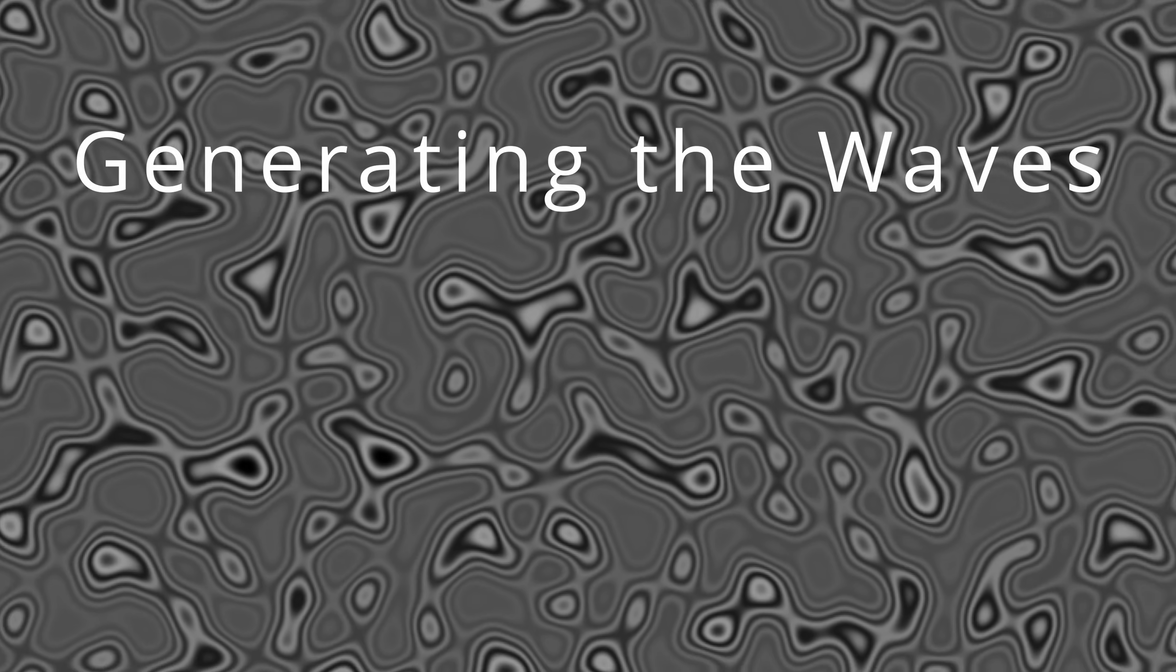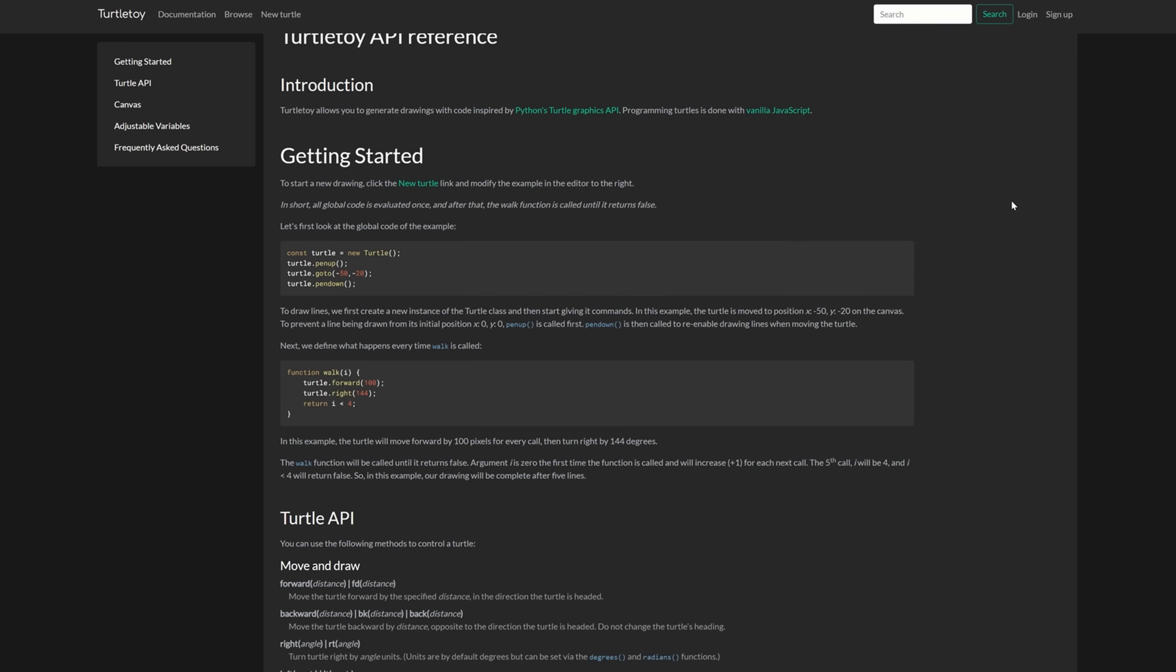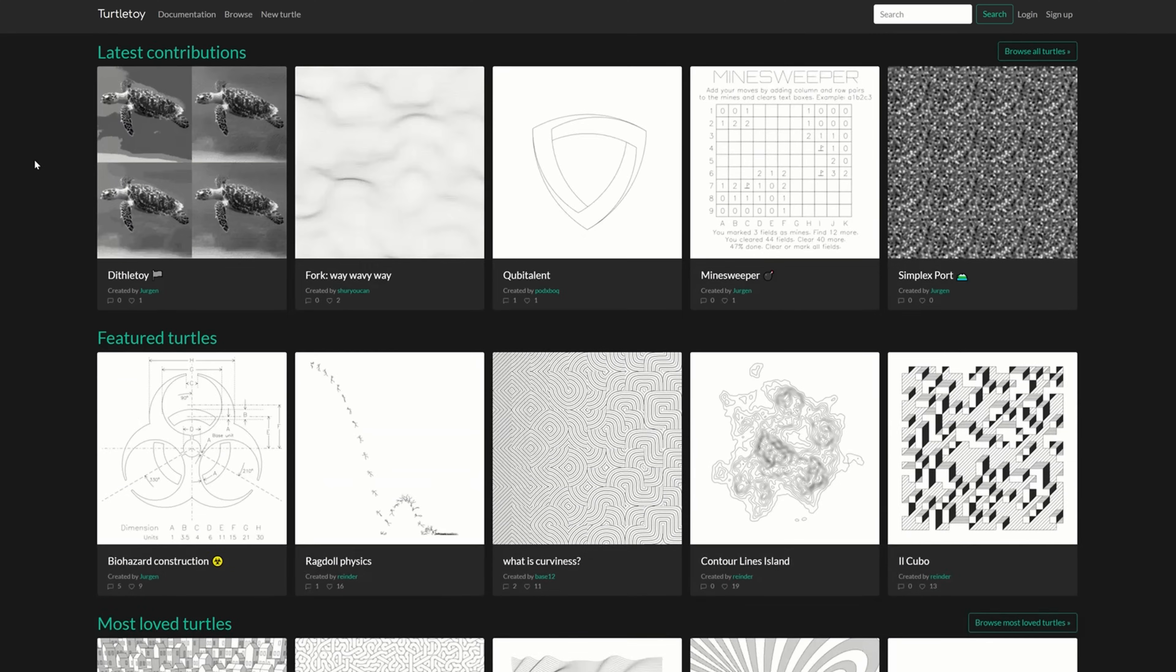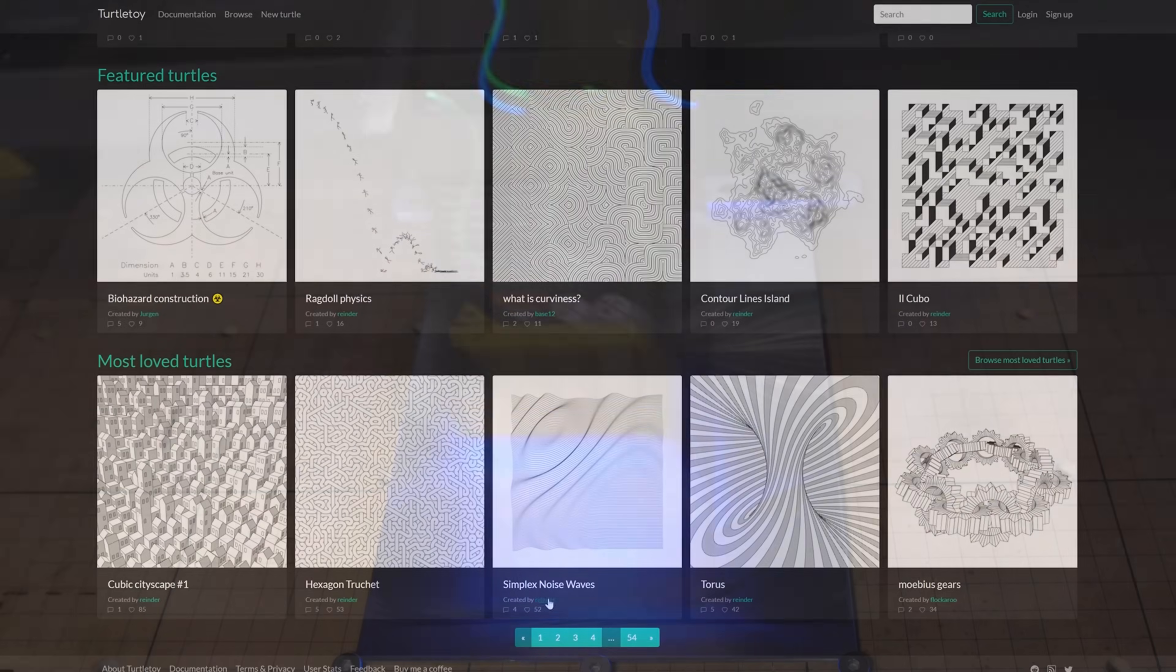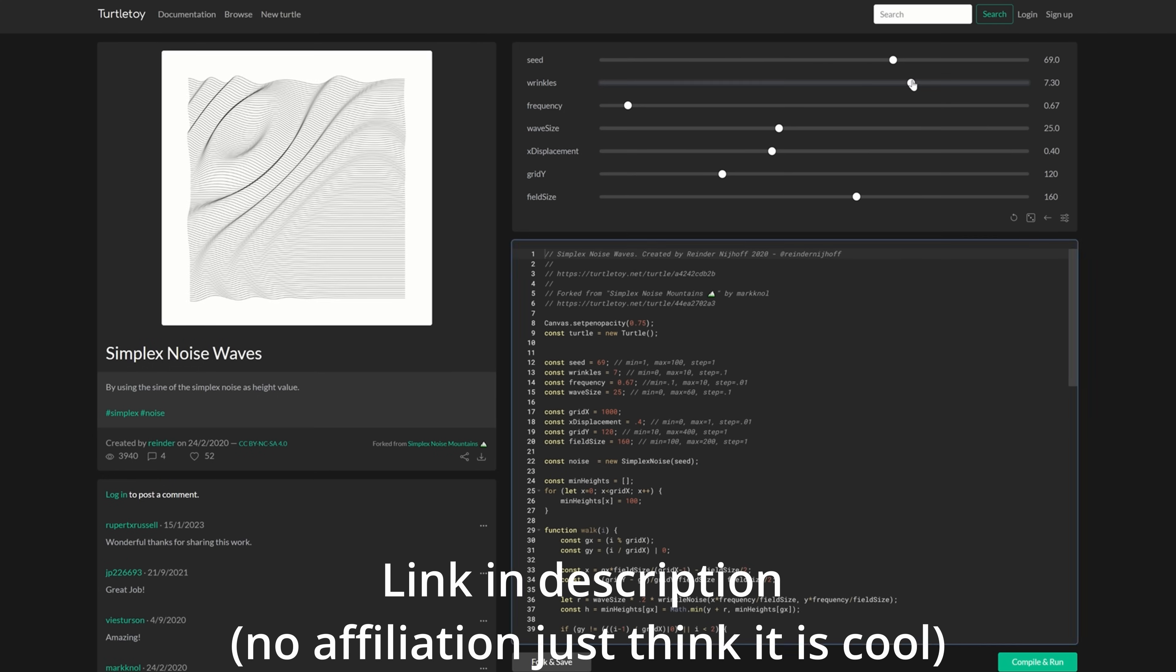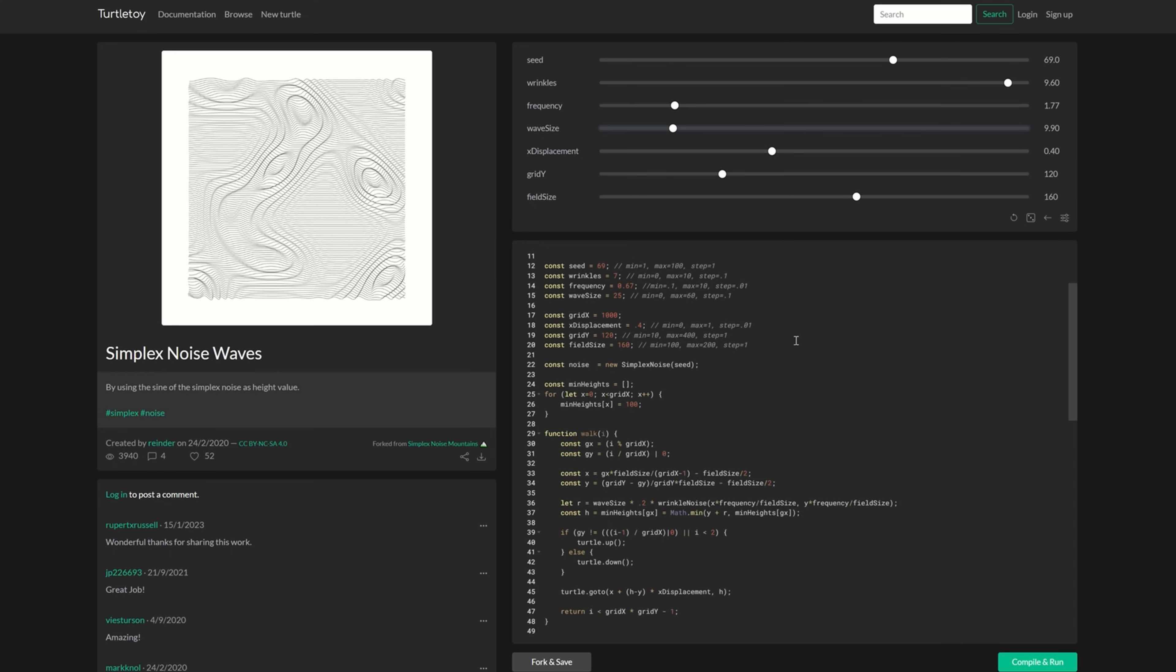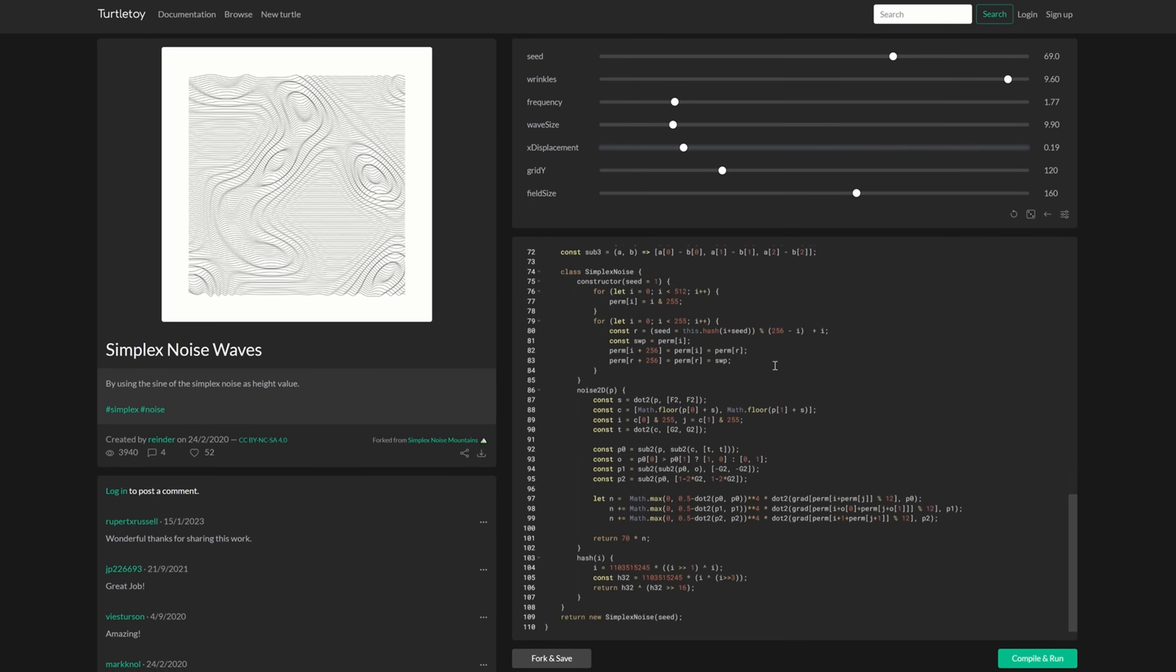First off I'm going to show you how I generated some of these wave models. There's a cool website called turtle toy where people upload generative 2D art along with the code used to generate it. I was on here looking for something to do on my laser engraver but I think people mostly use this for CNC pen plotters. There's some really cool stuff on here and I particularly liked the simplex noise wave generator made by Ryan Dehr in 2020. This gave me an idea that maybe I could adapt this to making 3D models of waves for the CNC machine.